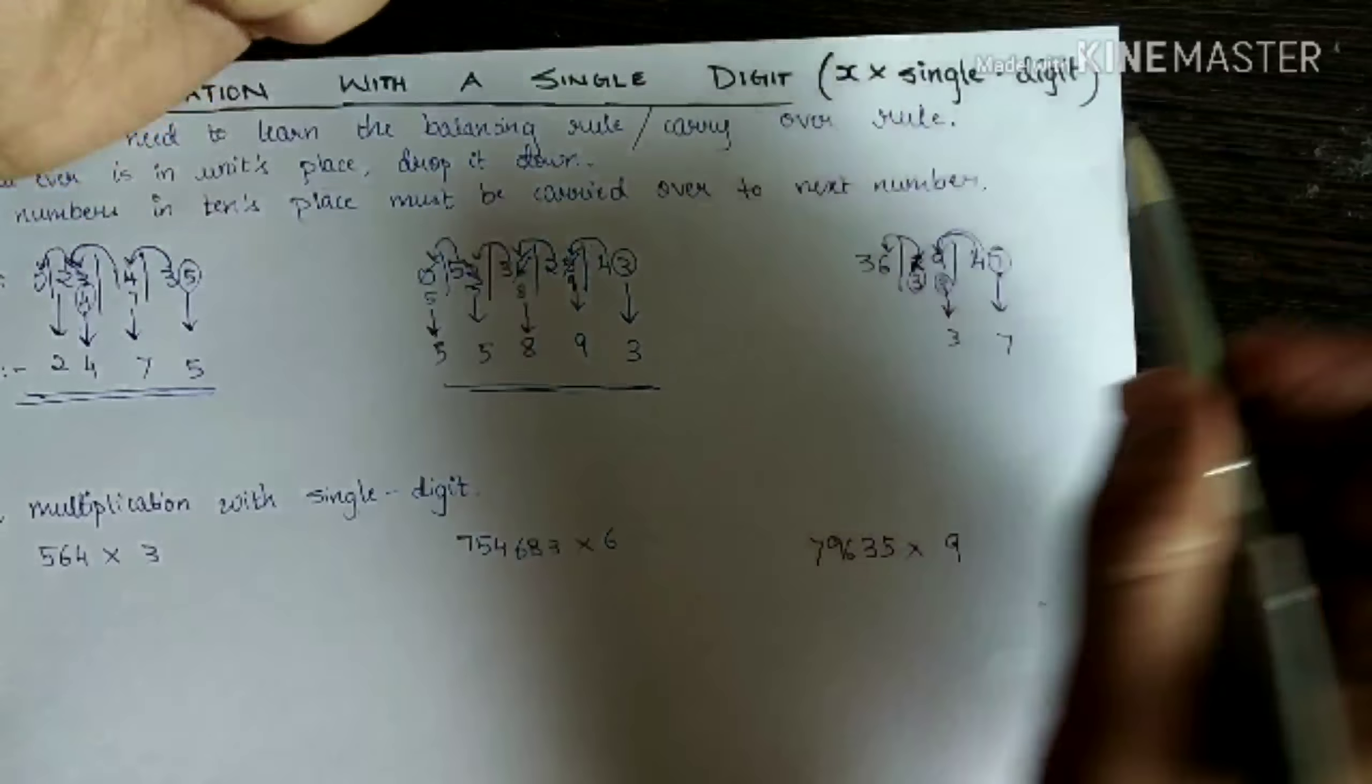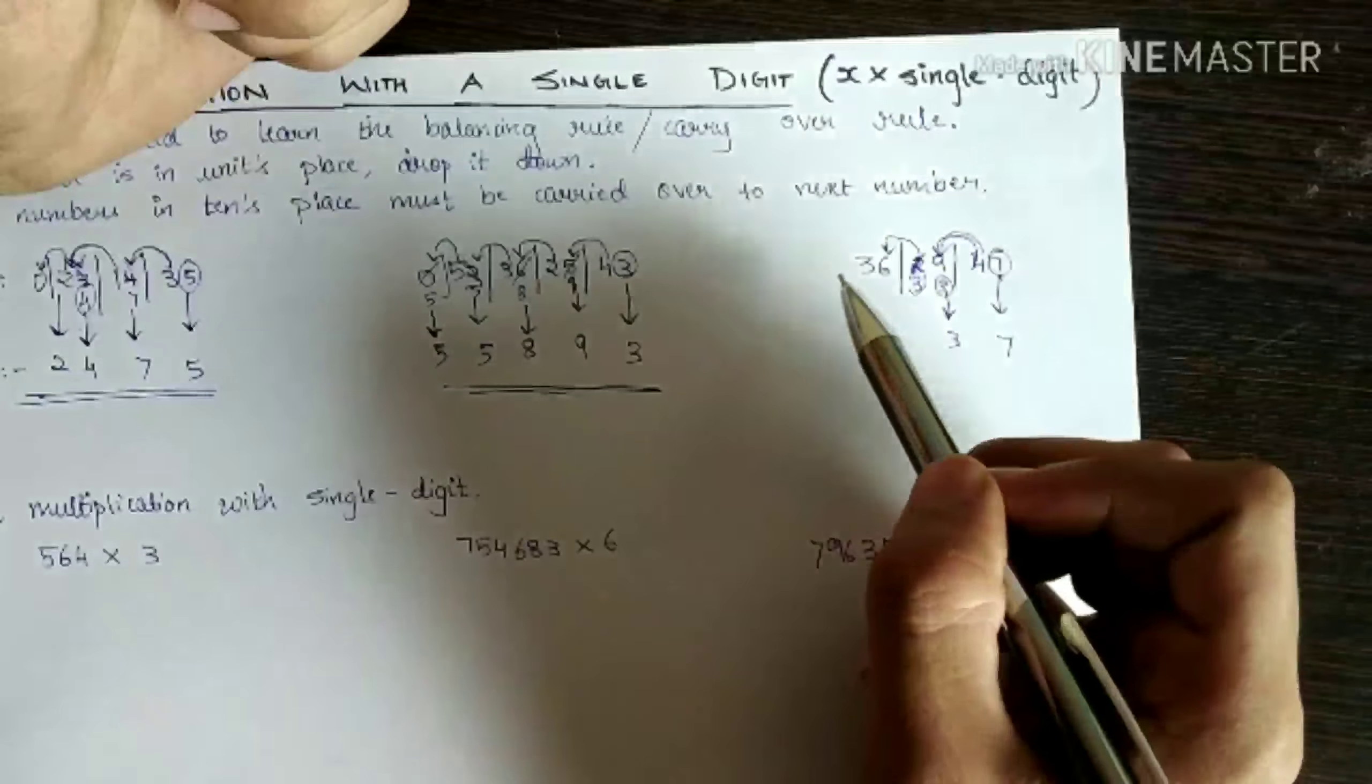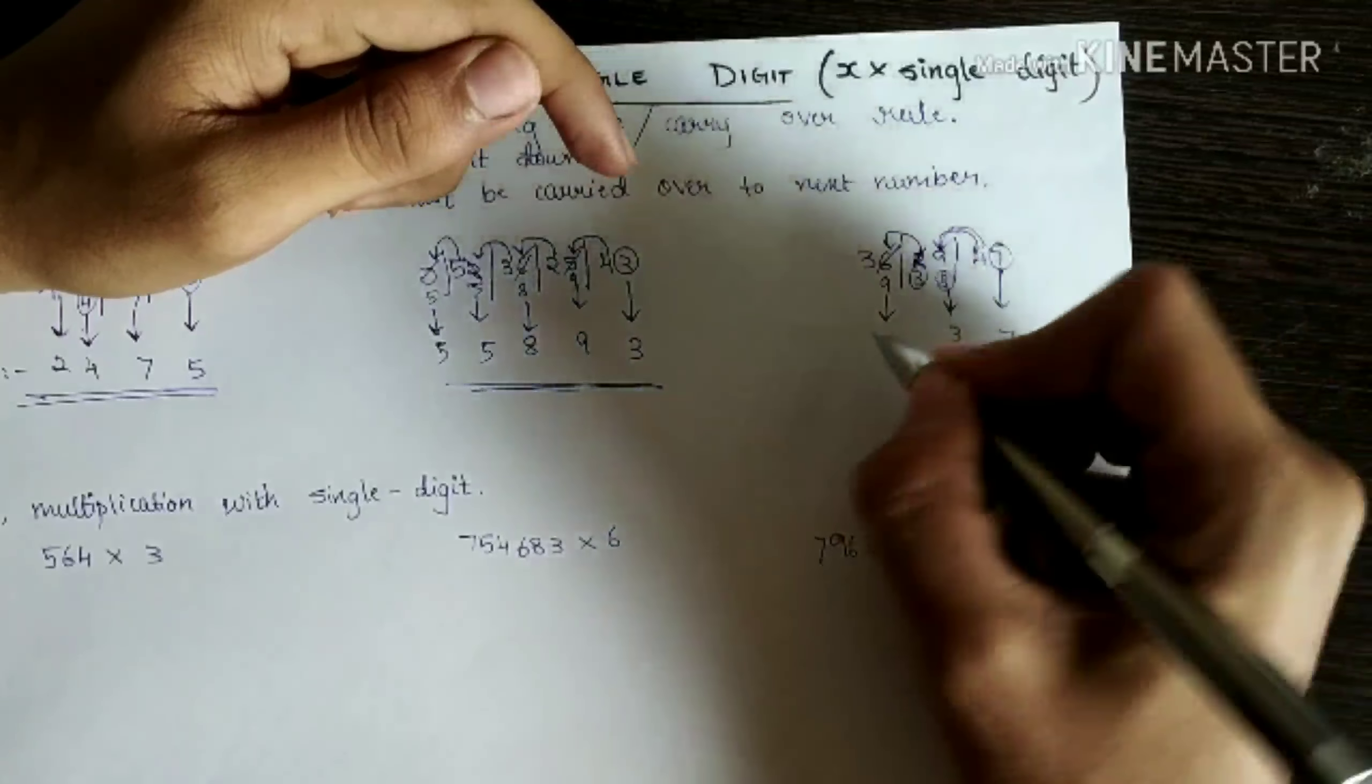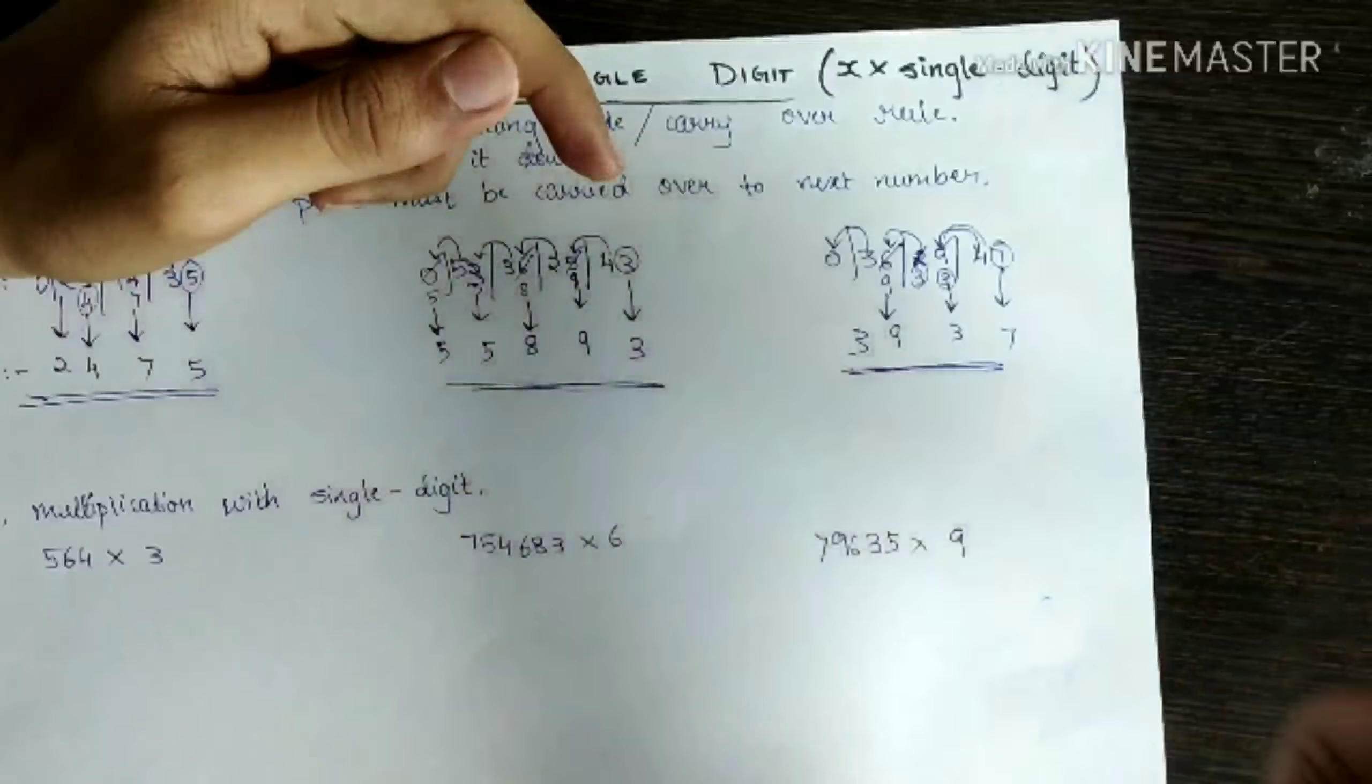So add it to the next one. Because whatever in tens place, we are supposed to carry it over to the next number. Three plus six, this becomes nine. Now nine you have to drop it down. And three, this is zero. Add three to zero. It becomes three. So final answer is three nine three seven.